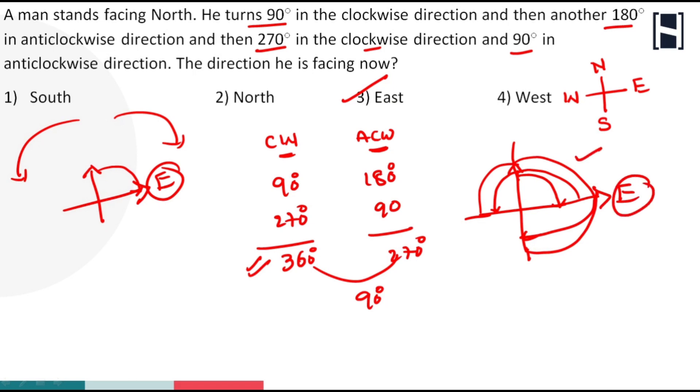The traditional method takes at least two to three minutes, which is a waste of time. The shortcut method is much faster. Is it clear?